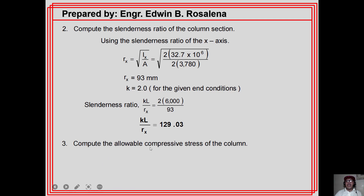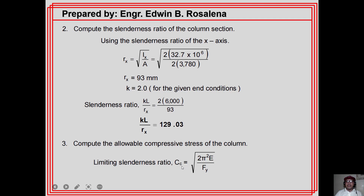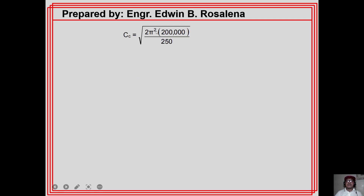For question number three, compute the allowable compressive stress. The allowable stress depends on comparing the slenderness ratio with the limiting slenderness ratio Cc. Cc = √(2π²E / Fy) divides the column into long and intermediate categories — if KL/R is less than Cc the column is intermediate; if greater, it is long. Substituting values: Cc = √(2π² × 200,000 / 250) = 125.66.